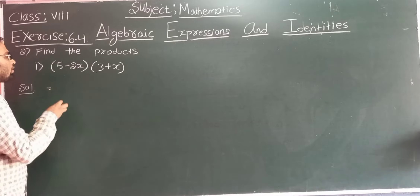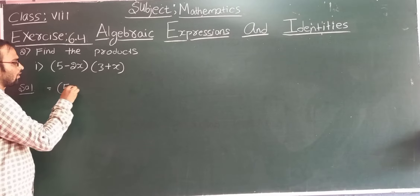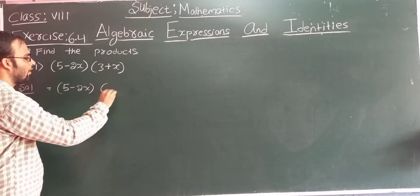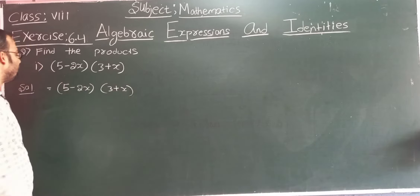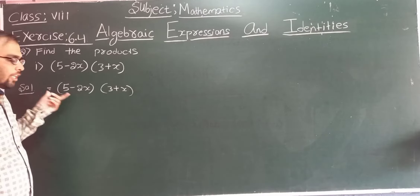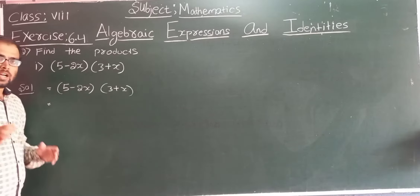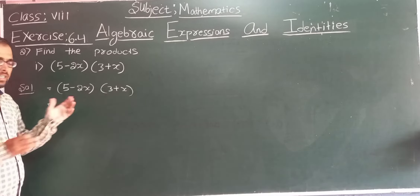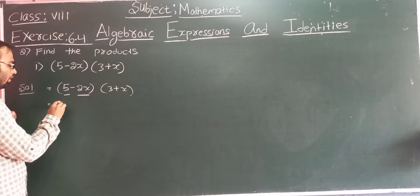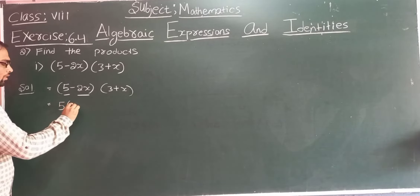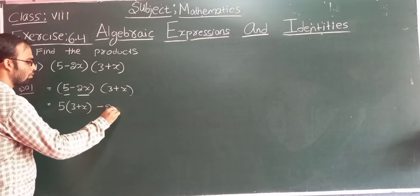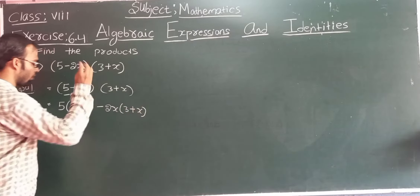So these two are the binomials and we need to find the product. The first step is to read the first binomial as it is: (5 minus 2x). As I told you, you can put a multiplication sign or leave it, because the bracket itself indicates multiplication. You can keep one term as it is and divide the other into two parts. Here I will keep (3 plus x) as it is and divide (5 minus 2x) into two parts: 5 and minus 2x. So write: 5 into (3 plus x), then minus 2 into (3 plus x).